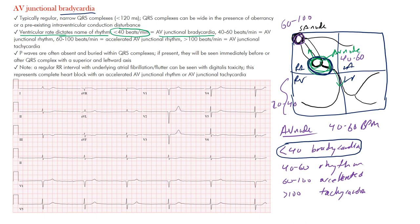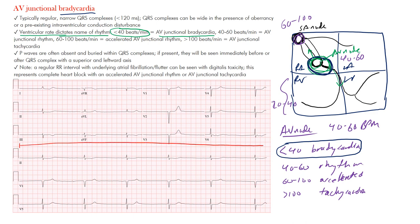When we talk about AV junctional bradycardia, we're saying that we have a rhythm originating from the AV junctional area with a rate less than 40 beats per minute. What you'll see on the EKG is a slow rate. Obviously, you don't have those normal P waves preceding the QRS complexes. Notice there are no P waves before each of these beats. They're quite slow. To calculate the ventricular rate, from beginning to end is 10 seconds; multiply by 6 to get 60 seconds, which is one minute. Count the complexes and multiply by 6 to get the rate in beats per minute.